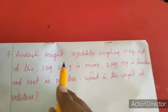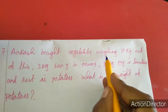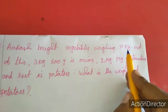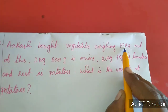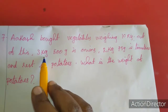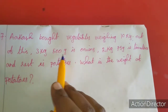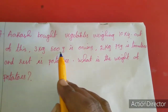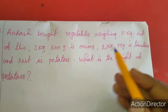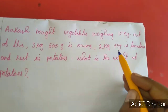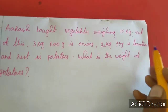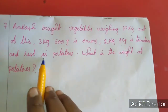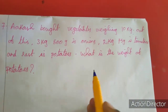7th sum: Asha bought vegetables weighing 10 kg. Out of this, 3 kg 500 gram is onion, and 2 kg 75 gram is tomato. The rest is potato. What is the weight of the potato?